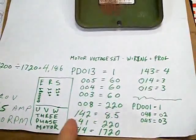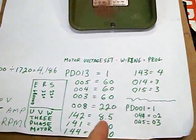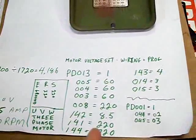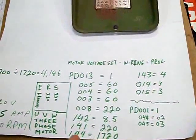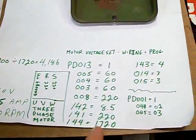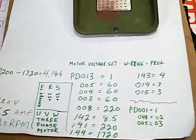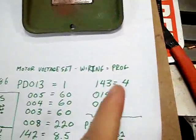220 was the max voltage. 142, that was the amperage on the motor, 8.5 amps. 141 was the voltage on the motor. 144, 1720 RPMs. And 143, that's the number of poles.